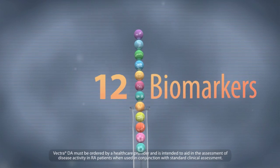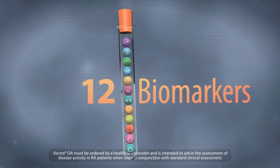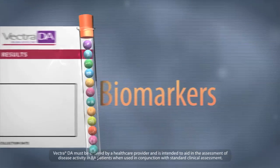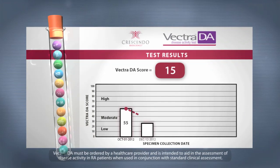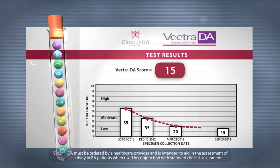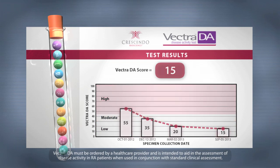Vectra DA is a blood test that measures 12 biomarkers to provide a single score from 1 to 100, classifying RA into low, moderate, or high disease activity.